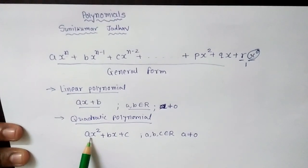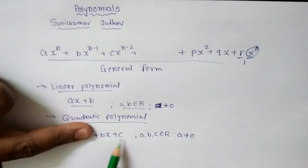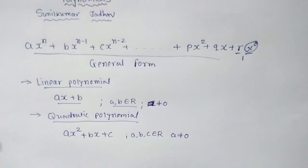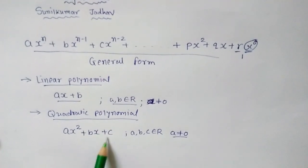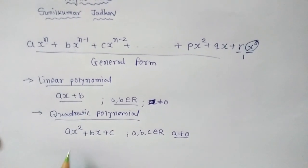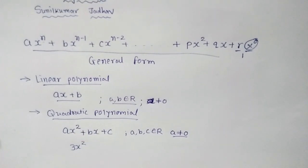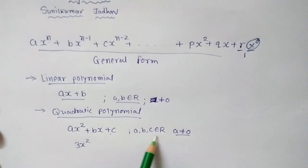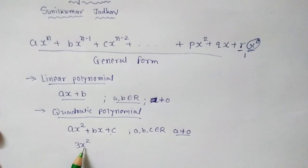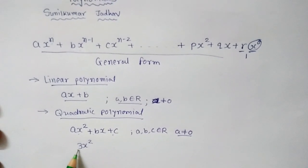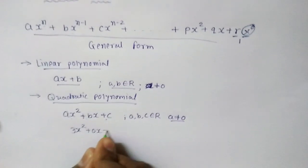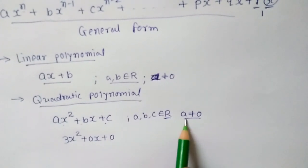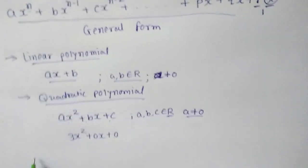If a were equal to 0, the x squared term would be eliminated and the polynomial would convert into a linear polynomial — hence the condition a is not equal to 0. Even if b and c are 0, it does not make any difference. For example, 3x squared is also a quadratic polynomial. In standard form it would be written as 3x squared plus 0 times x plus 0, where b equals 0 and c equals 0, but a equals 3 which is not equal to 0.